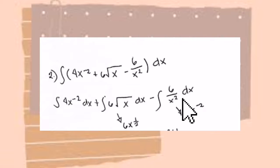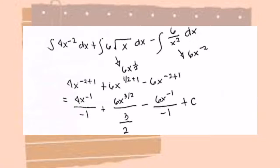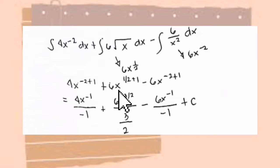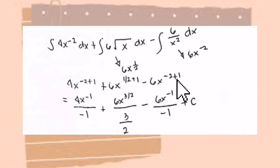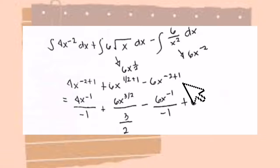We proceed with the power rule. 4x raised to negative 2 plus 1. For 6 square root of x, we rewrite it as 6x raised to 1 half, then plus 1. For 6 over x squared, we move x squared to the numerator, making it negative, so it becomes minus 6x raised to negative 2 plus 1.